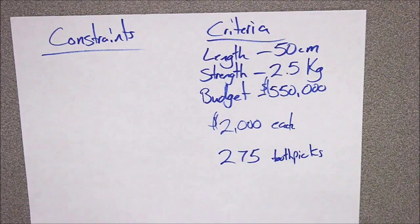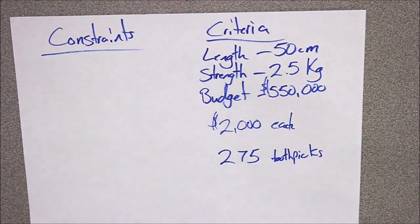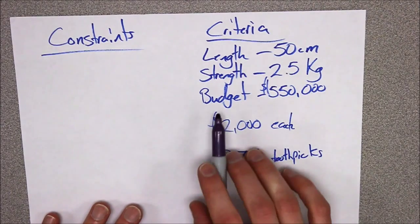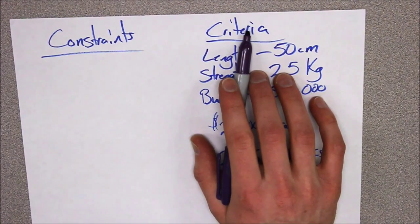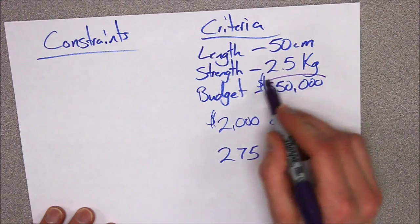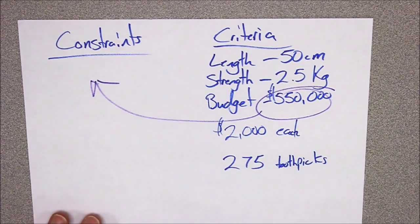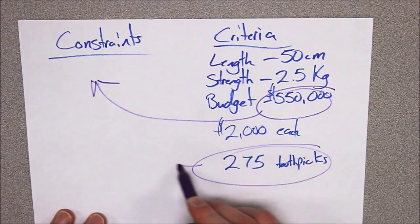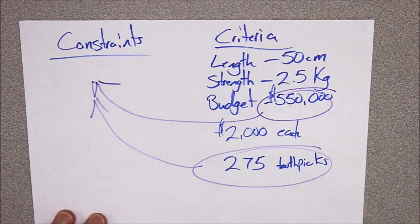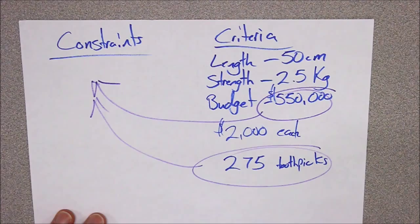Now let's shift over to constraints. Technically, some of these criteria could also work as a constraint. The fact that I have to stay under budget is a criteria, but my constraint is the number — so the toothpick count and the budget limit would both go under constraints.